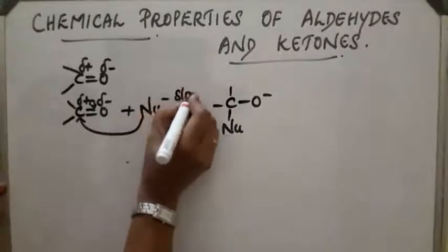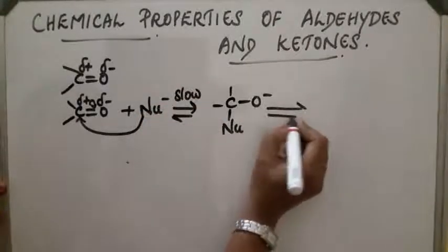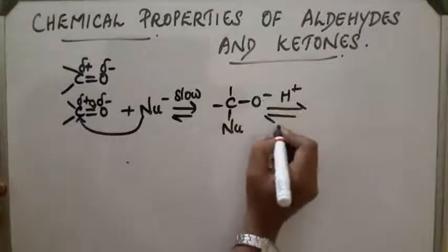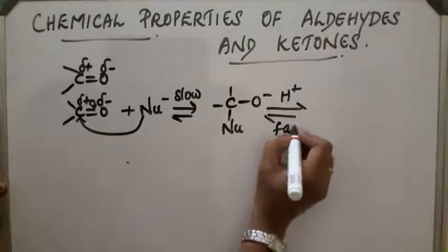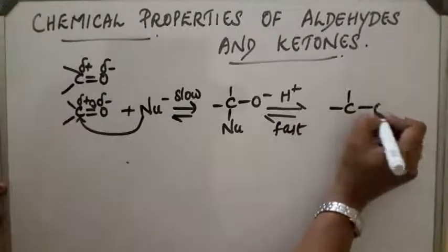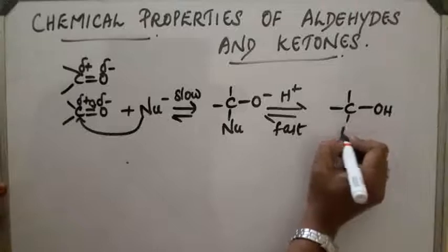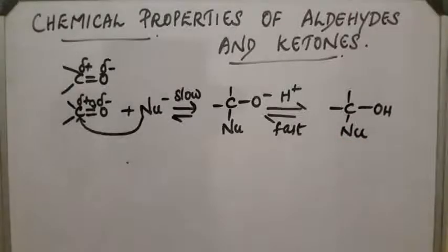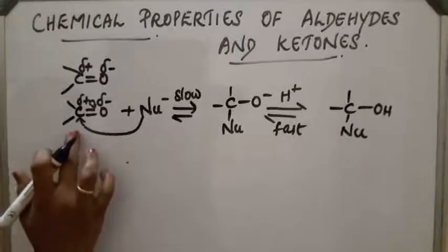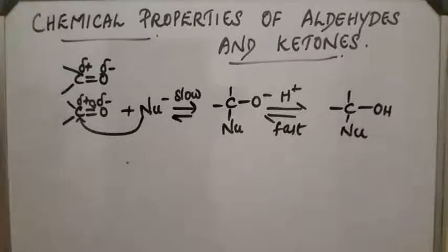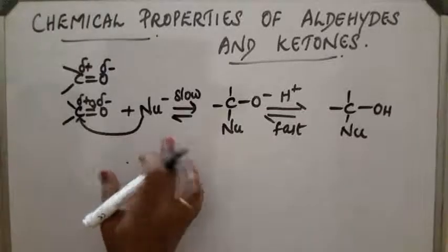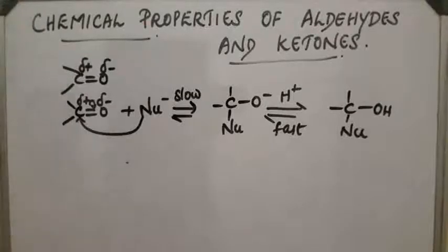This nucleophilic attack is the slowest step and the rate-determining step. In the next step, a proton attacks the O⁻, which is the fast step, yielding the nucleophilic addition product. The carbon changes from SP2 hybridization to SP3 hybridization as the tetrahedral alkoxide intermediate is protonated to give the neutral addition product.